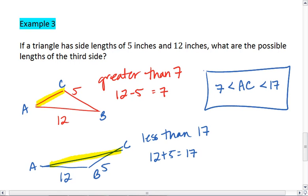If you want the algorithmic formula way, basically the two sides you are given, find the difference. That's our low number. Add them together, that's our high number. The third side has to be somewhere in between those two numbers.